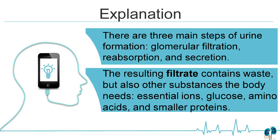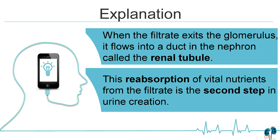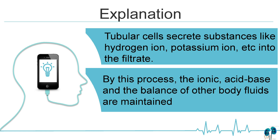There are three main steps of urine formation: glomerular filtration, reabsorption, and secretion. The resulting filtrate contains waste but also other substances the body needs, like essential ions, glucose, amino acids, and smaller proteins. One hundred percent of glucose and amino acids will be reabsorbed in the proximal convoluted tubules. The reabsorption of vital nutrients from the filtrate is the second step in urine creation. Tubular cells secrete substances like hydrogen ions and potassium ions into the filtrate, maintaining the ionic, acid-base, and fluid balance of the body.